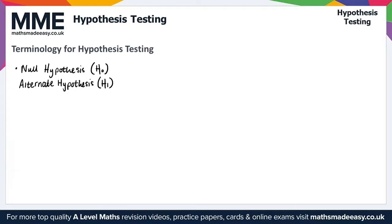A hypothesis test is the means by which we generate a test statistic that directs us to either reject or not reject the null hypothesis. The test statistic is a summary of the collected data, and should have a sampling distribution specified by the null hypothesis.